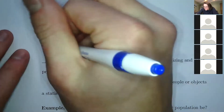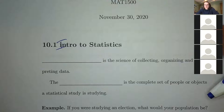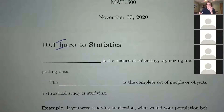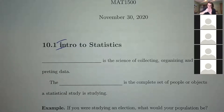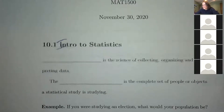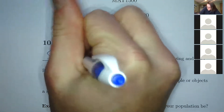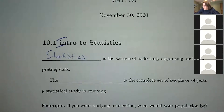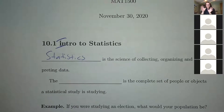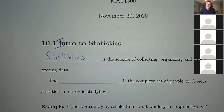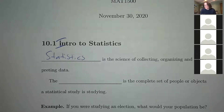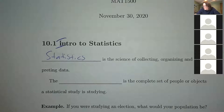This isn't a stats course, but we're covering topics you'd talk about in a stats course, just in a survey format. Statistics is the science of collecting, organizing, and interpreting data. It's used everywhere — biology, chemistry, physics, political science — all the sciences use statistics in some way. Political science is basically applied statistics.